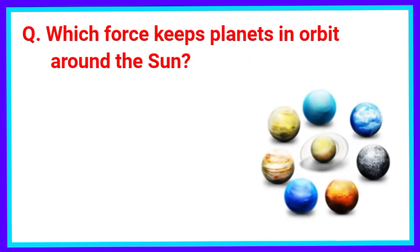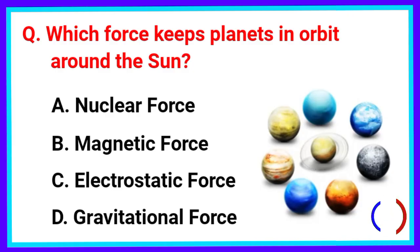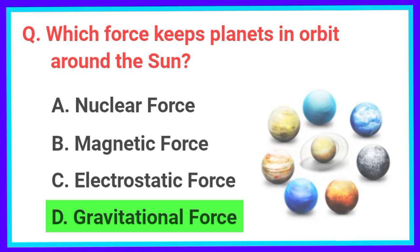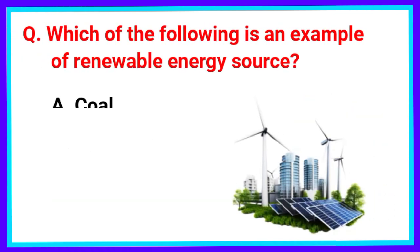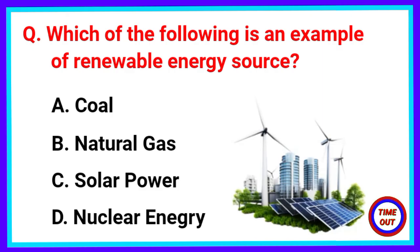Which force keeps planets in orbit around the sun? The correct answer is Option D. Gravitational force. Which of the following is an example of renewable energy source? The correct answer is Option C. Solar power.